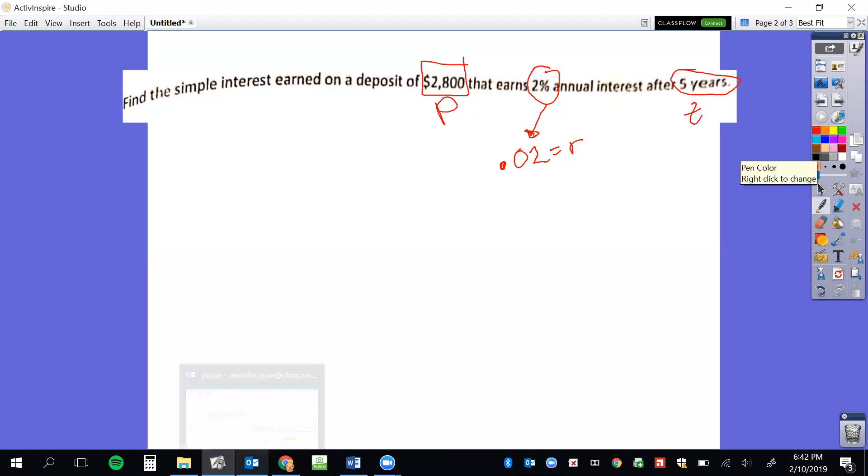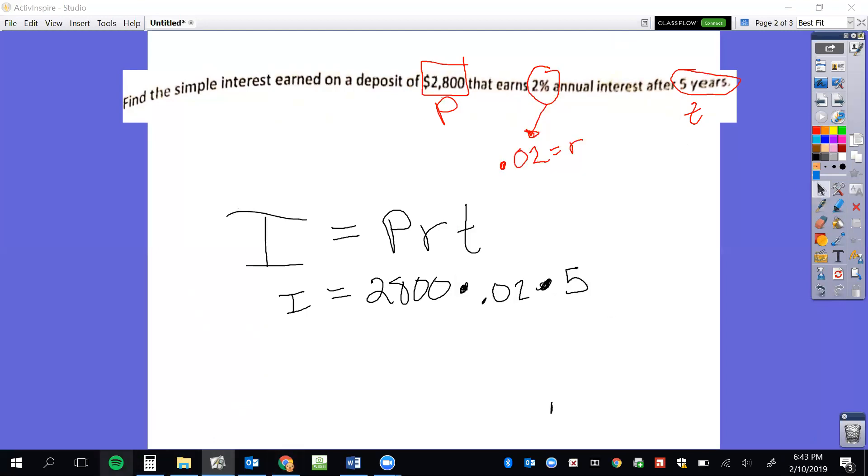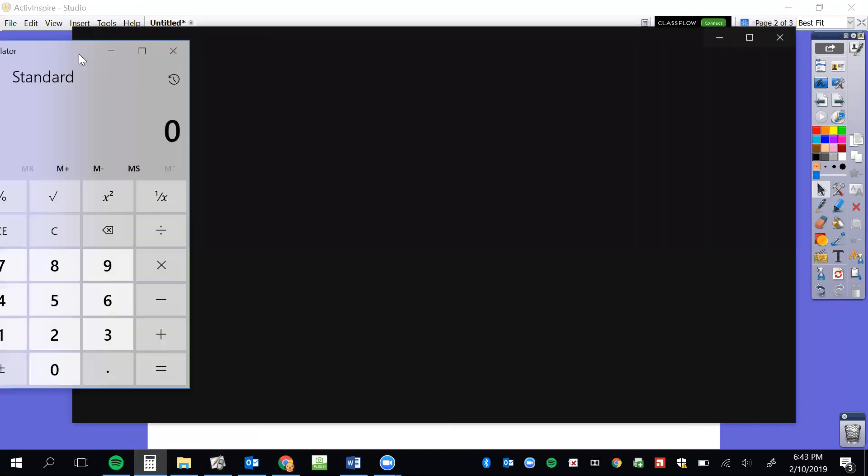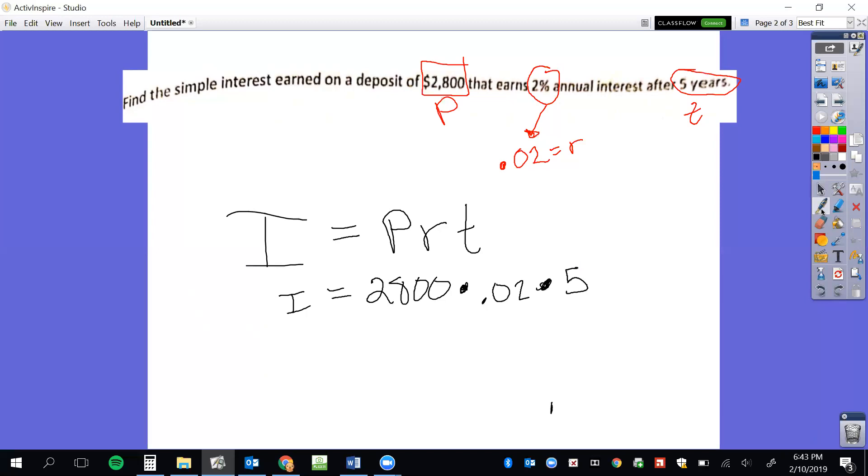So now if I write my formula, interest equals PRT, let's plug it in. Interest equals P is my principal, that's $2,800, times my rate which is .02, and then times my time which is five. Now at this point, you can use a calculator to help you. So 2,800 times .02 and then times five. So that means my interest that I earned is $280.